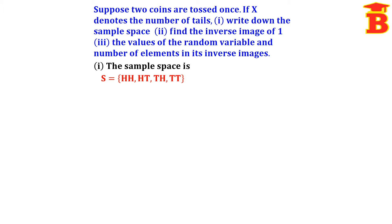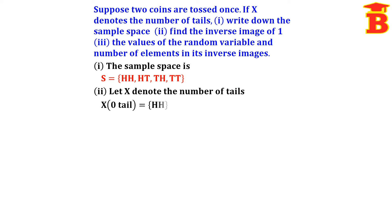Given that X denotes the number of tails, X is the random variable. It takes the values 0, 1, 2 — the possible numbers of tails. For 0 tails, there is only one possibility: HH. So the count equals 1.